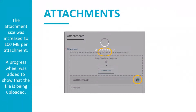The size limit for each attachment was increased to 100 megabytes. We have the ability to increase it to 500 megabytes per attachment, but we're going to see how well the 100 megabyte limit works for everyone. If you routinely have individual attachments that exceed 100 megabytes, please let me know. Since large files take a while to upload, a progress wheel was added so that you can see that your file is being uploaded.